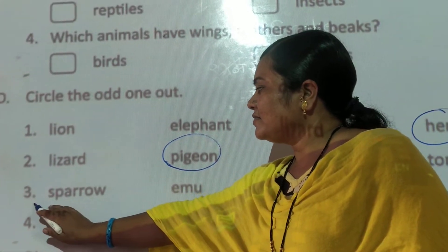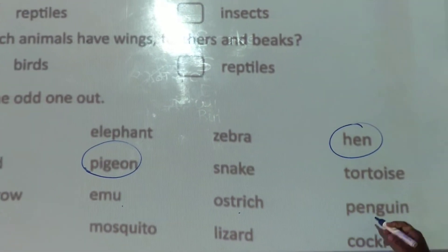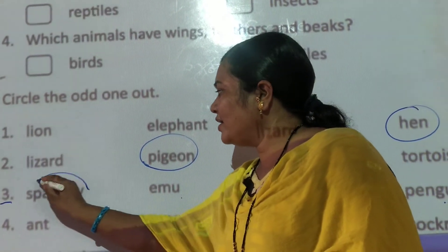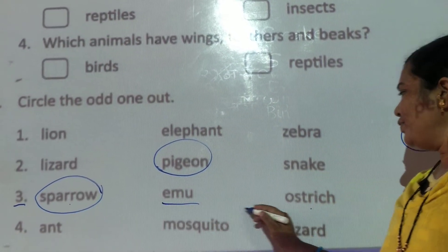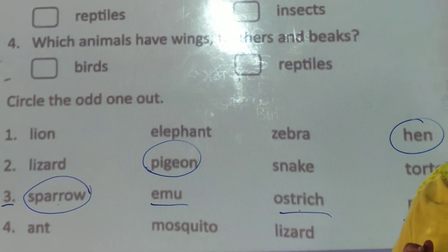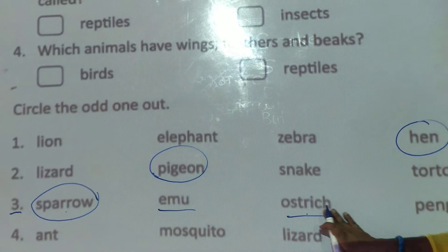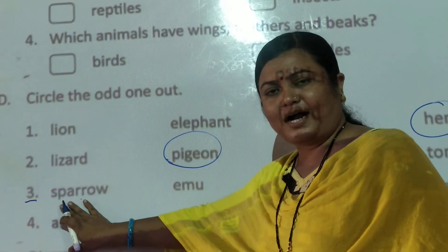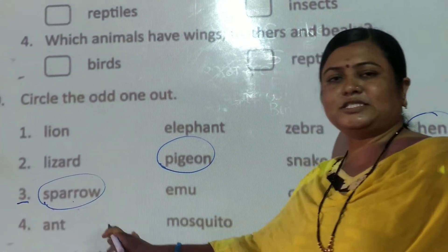Question 3: sparrow, emu, ostrich, penguin. Guess the odd word. Our odd word is sparrow. Why? Because emu, ostrich, and penguin are also birds but they cannot fly. Sparrow is also a bird, but sparrow can fly. That's why our odd word is sparrow.